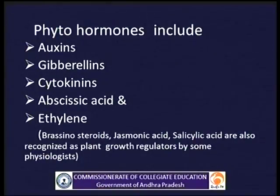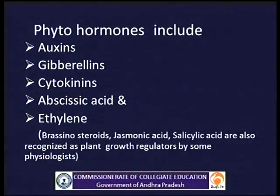Phytohormones are mainly classified into growth promoters — auxins, gibberellins and cytokinins — and growth inhibitors such as abscisic acid and ethylene.